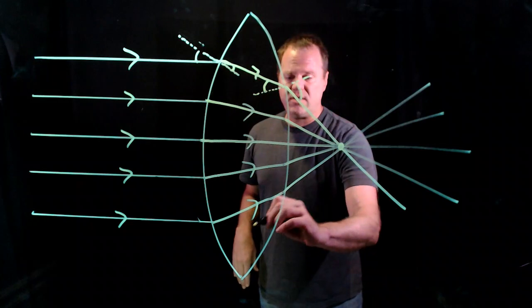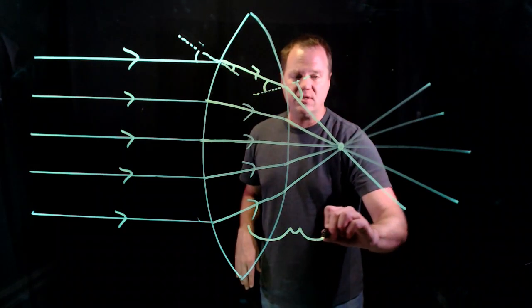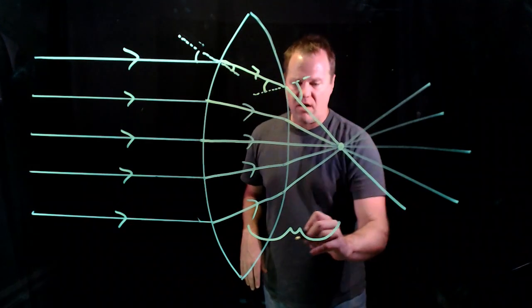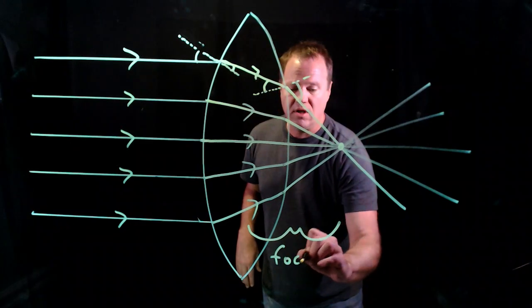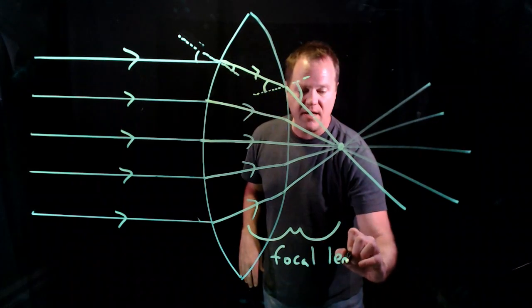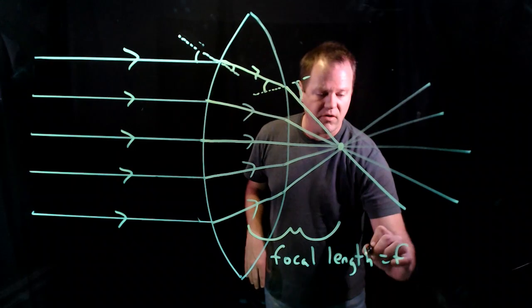And the distance between the center of that lens and the focal point is called the focal length. And we would use the symbol F for that.